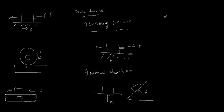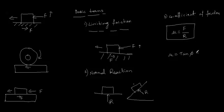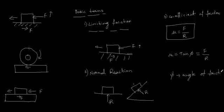The next term is coefficient of friction, denoted by the symbol μ. It is defined as the ratio of frictional force to the normal reaction: μ = F/R. Additionally, μ = tan φ, where φ is the angle of friction. So the coefficient of friction equals tan of the angle of friction.